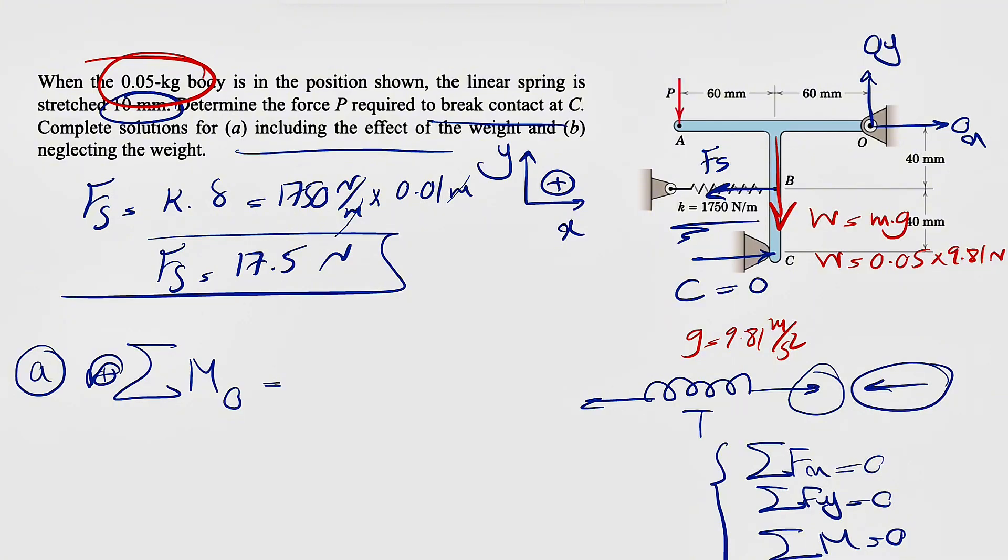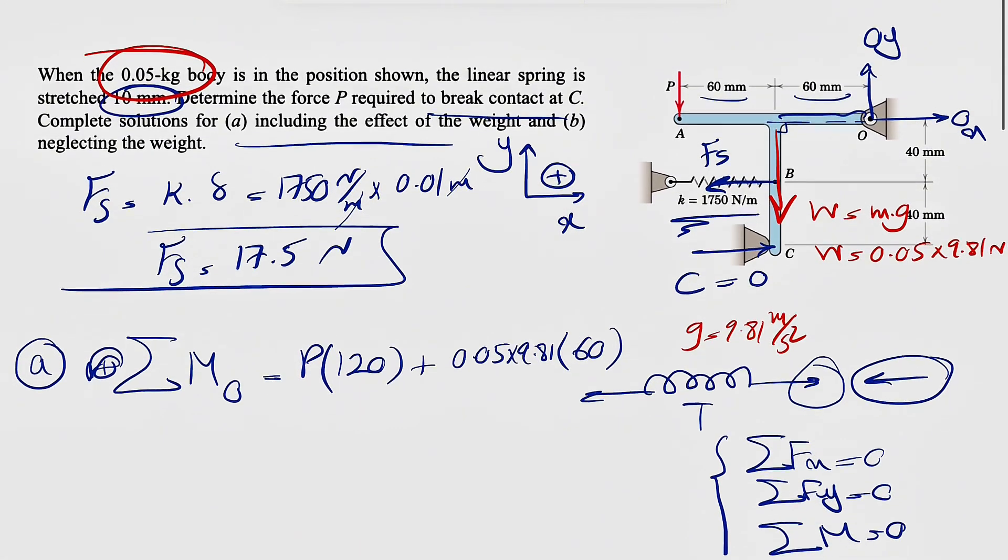For moment about point O in part A, force P creates a counterclockwise moment. P times the vertical distance to the line of action is 120 mm. The weight also creates a counterclockwise moment: 0.05 × 9.81 times vertical distance 60 mm.